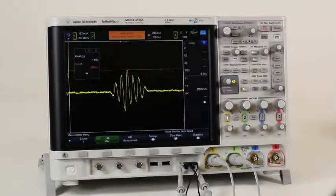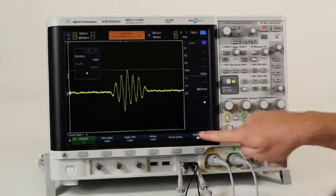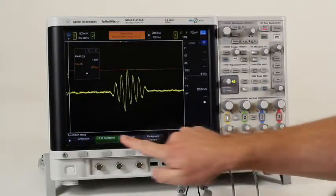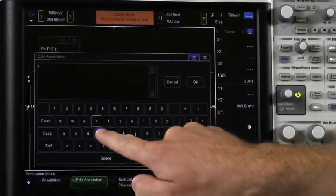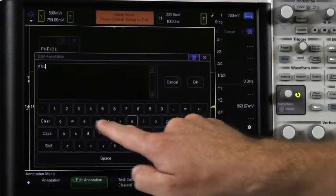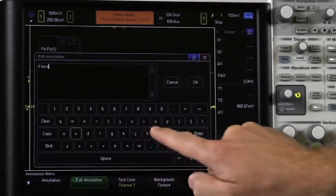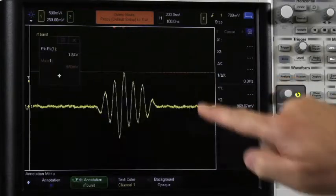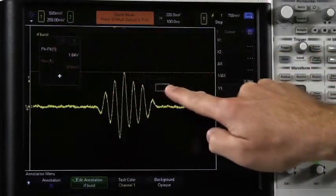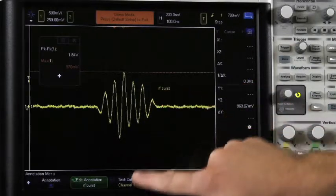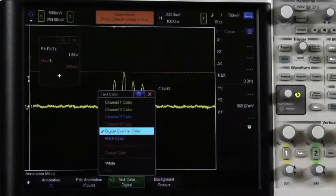From a documentation standpoint, as a customer, I can easily add on-screen annotations. I'll simply press the label front panel button, then annotation soft key, and select edit annotation. A nice design for touch keyboard pops up. I'll type in a brief message to remind me of what the signal was, and I can now move this annotation box around screen, change its color, and change its background color.